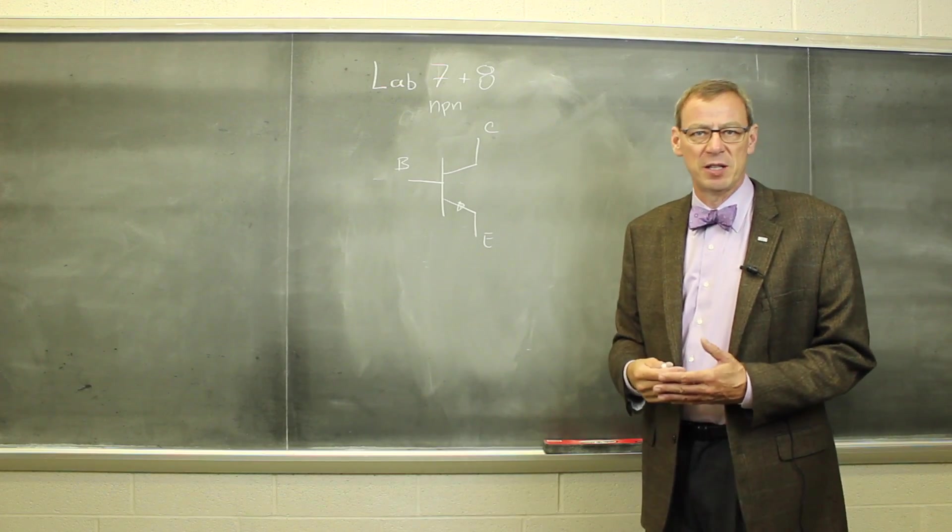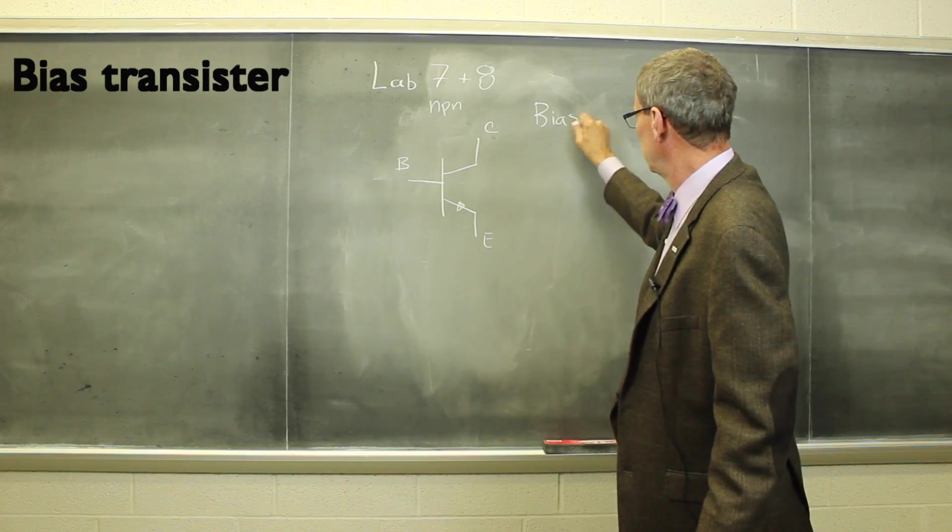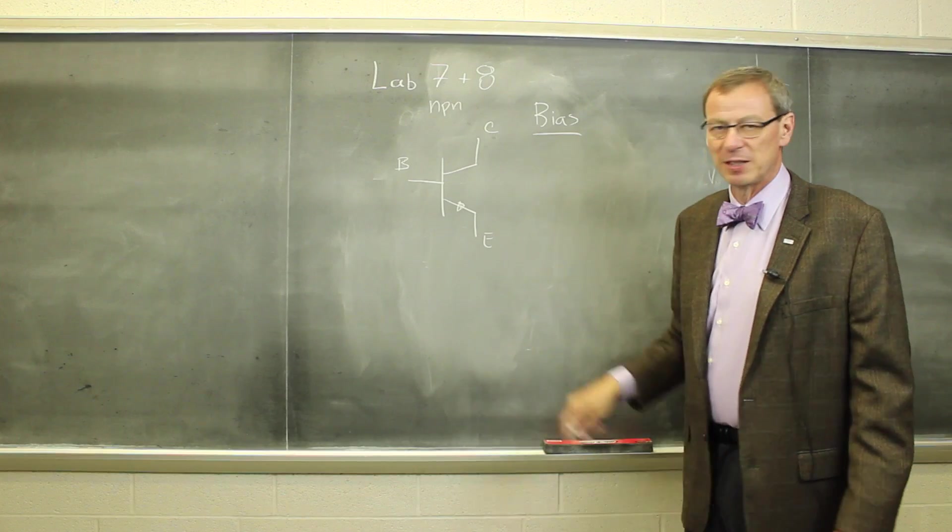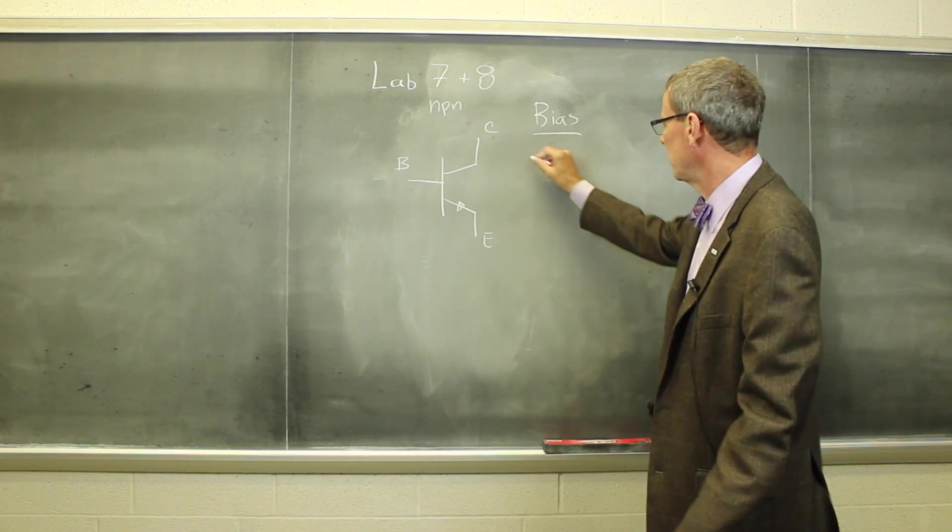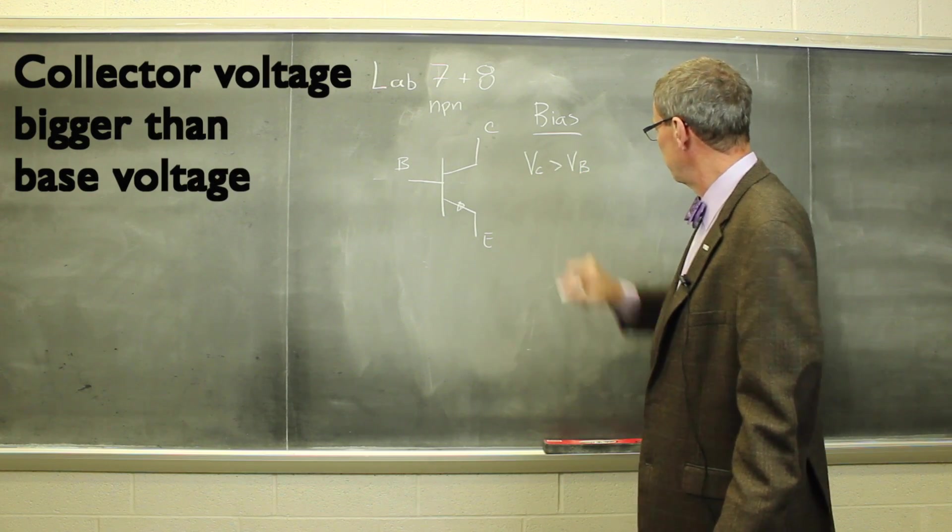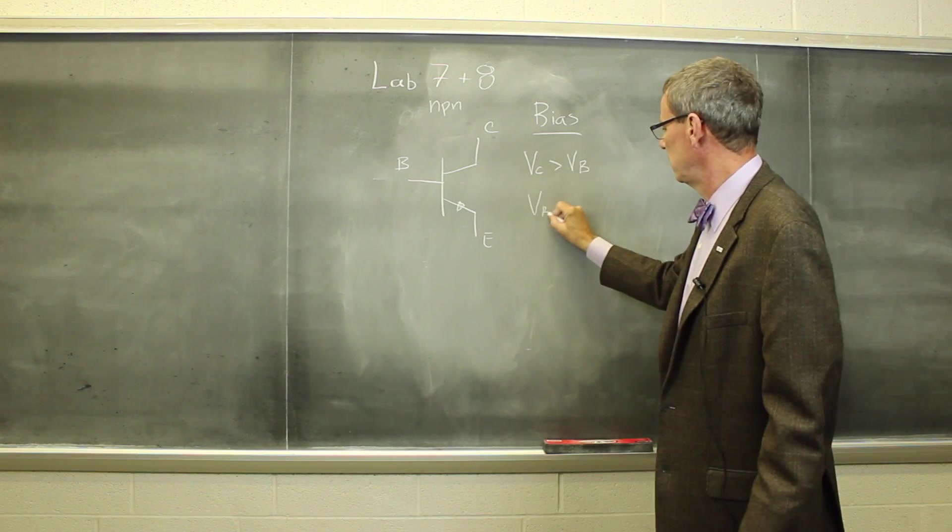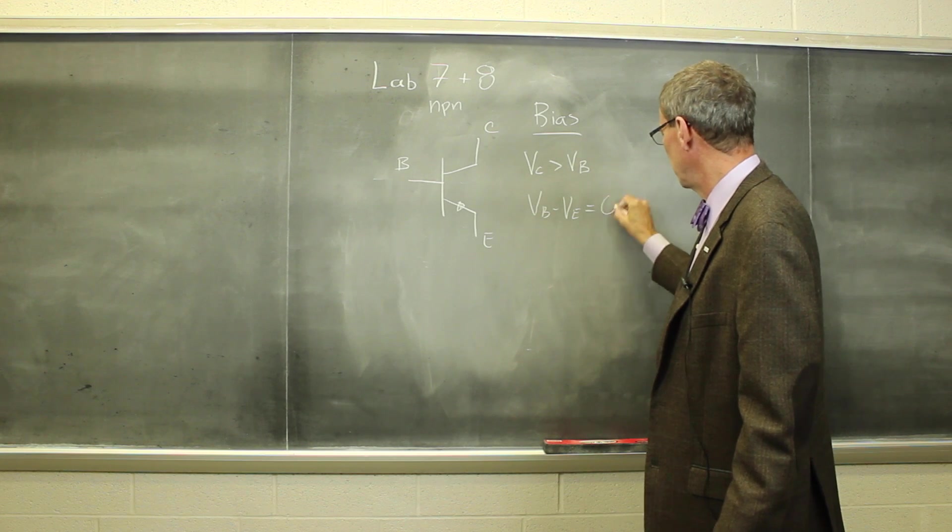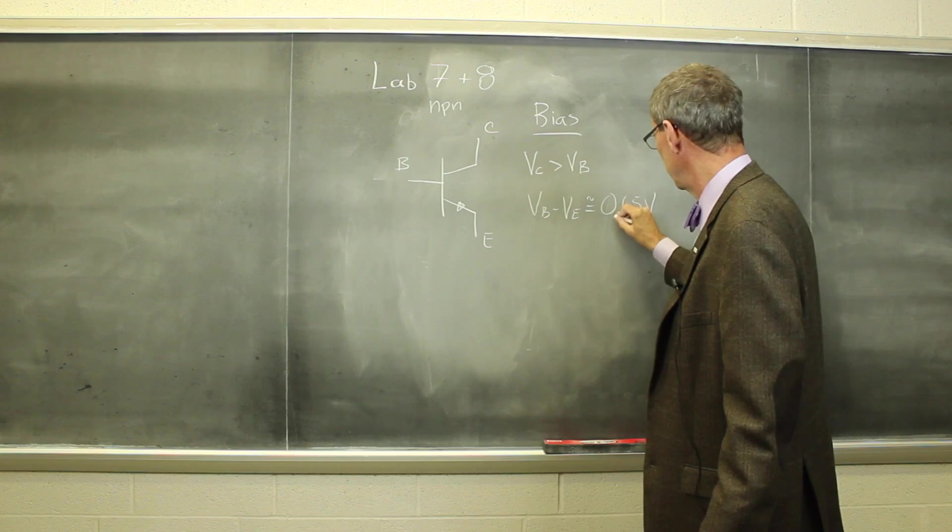The crucial thing we need to do with this transistor before we can use it is to correctly bias that transistor. Biasing means we apply DC voltage levels to the various legs to put the transistor into a useful state. The state we're after requires us to have the collector voltage bigger than the base voltage. And when that's true, the base voltage minus the emitter voltage is one diode drop. So we approximate that as 0.65 volts or one diode drop.